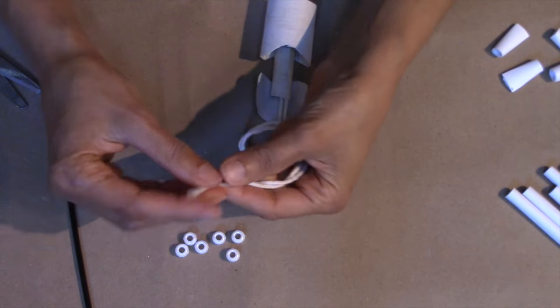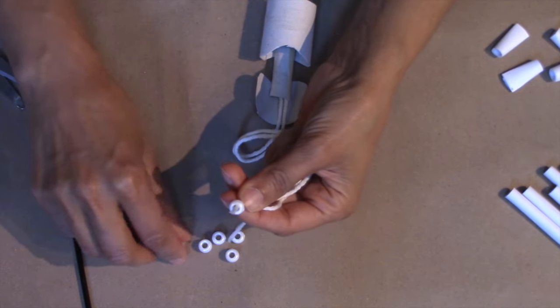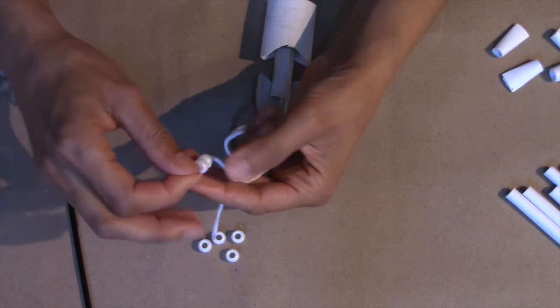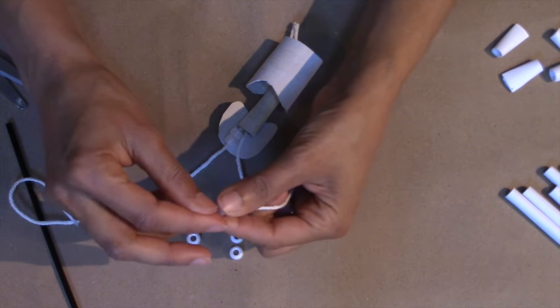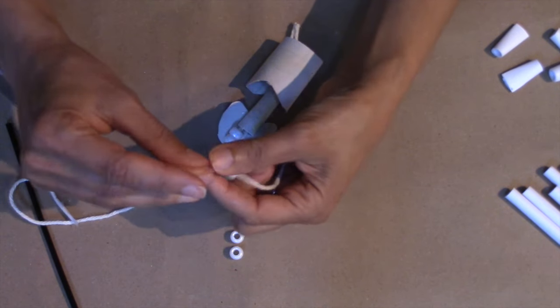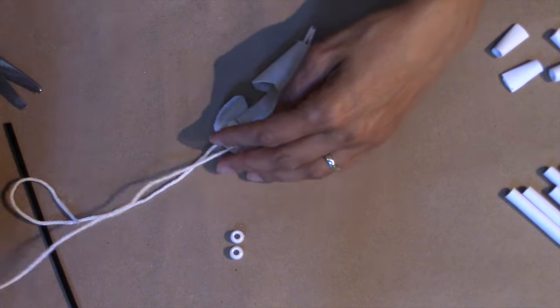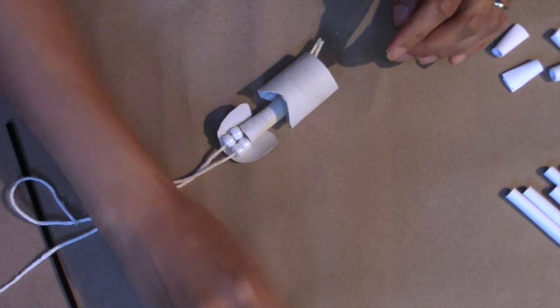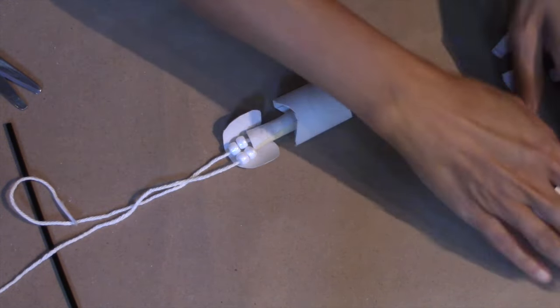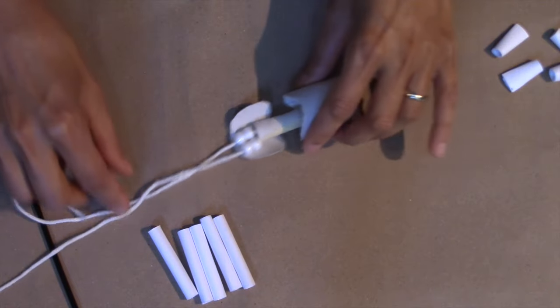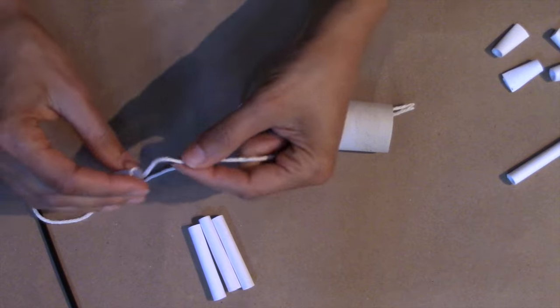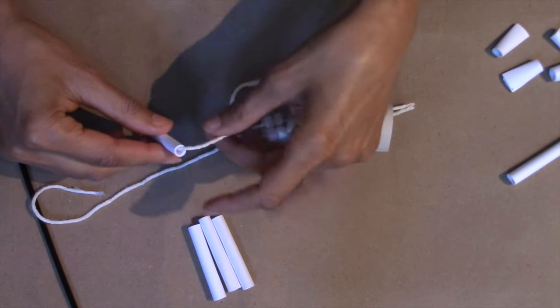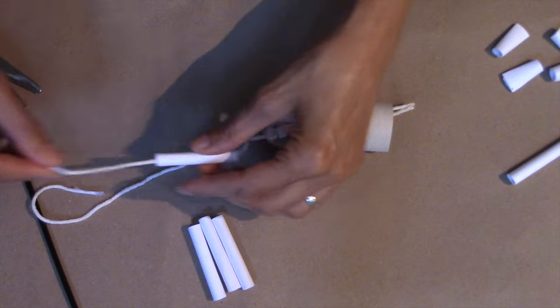Now you can start beading your skeleton's legs. On both cords, you'll start with two beads on each string to create the hip joints. Then a 2 inch paper bead for the femur, a plastic bead for the knee, and another 2 inch bead for the lower bones.